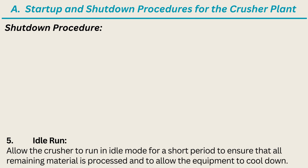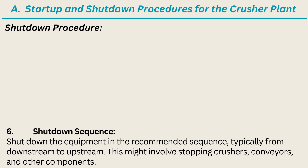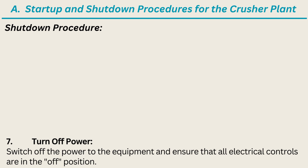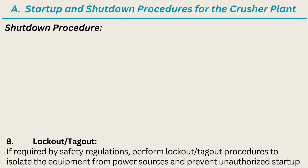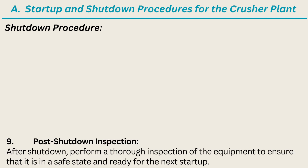5. Idle run. Allow the crusher to run in idle mode for a short period to ensure that all remaining material is processed and to allow the equipment to cool down. 6. Shut down sequence. Shut down the equipment in the recommended sequence, typically from downstream to upstream. This might involve stopping crushers, conveyors, and other components. 7. Turn off power. Switch off the power to the equipment and ensure that all electrical controls are in the off position. 8. Lock out / tag out. If required by safety regulations, perform lock out / tag out procedures to isolate the equipment from power sources and prevent unauthorized startup. 9. Post shutdown inspection. After shutdown, perform a thorough inspection of the equipment to ensure that it is in a safe state and ready for the next startup.